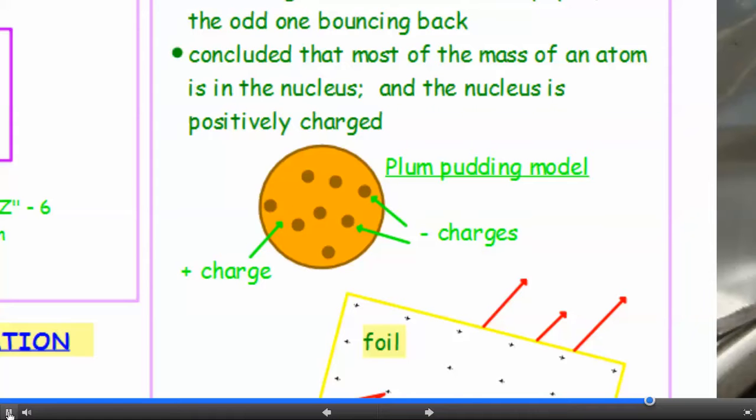So here's a representation of the plum pudding model, a sea of positive charge with negative charges buried inside.